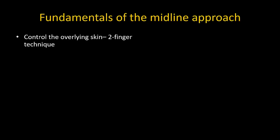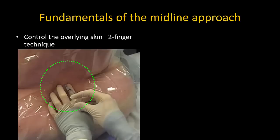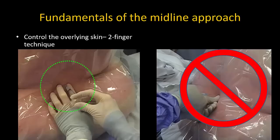The first and possibly most important thing in any percutaneous procedure is to control the overlying skin. This ensures that our skin puncture point has a constant relationship to the underlying deeper target — in this case, the spinal column. If we don't do this, we can easily be three to four millimeters off the midline. This is best done by using the second and third fingers of our non-dominant hand for palpation and fixation. I strongly recommend avoiding the habit of palpating spinous processes with your thumb, as it does not allow you to subsequently control the skin.